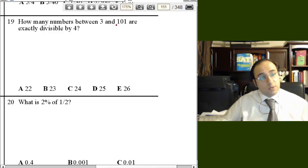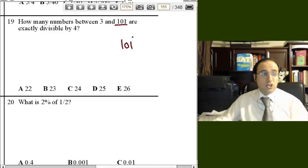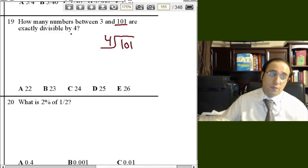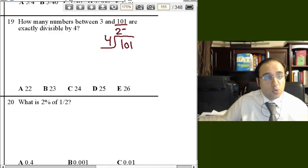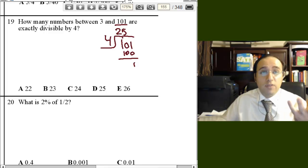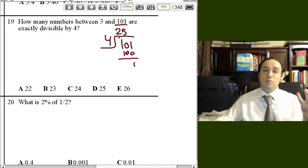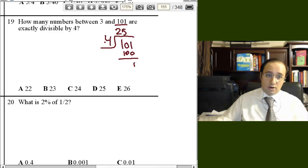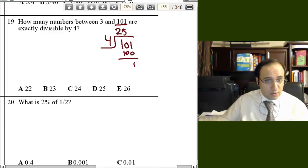So, first thing we do is we get 101, the number in the end of the range, and we divide that by 4 to find how many numbers are divisible by 4. 4 times what? 4 times 25 is 100. And you have a remainder of 1, which really doesn't mean anything. So, we have 25 numbers that are multiples of 4 or that are divisible by 4 and are less than 101.